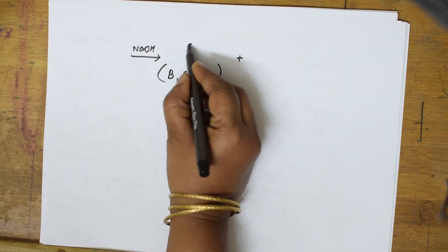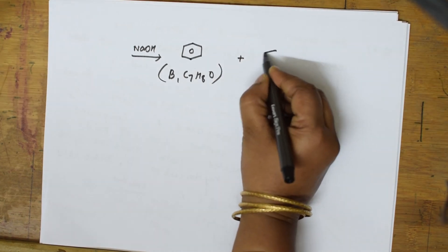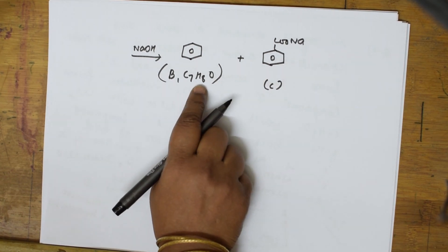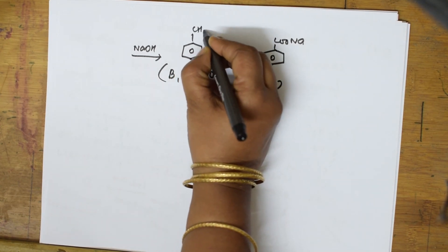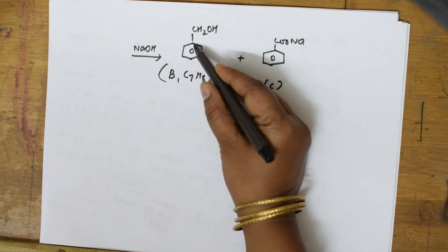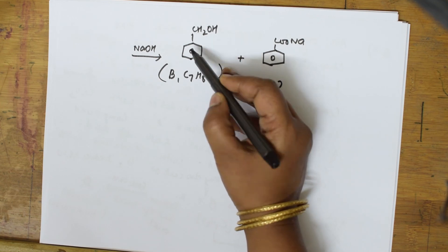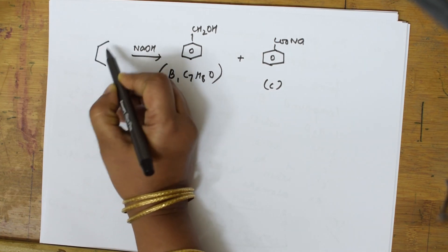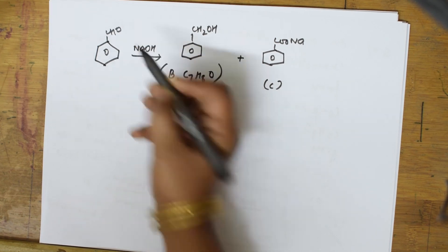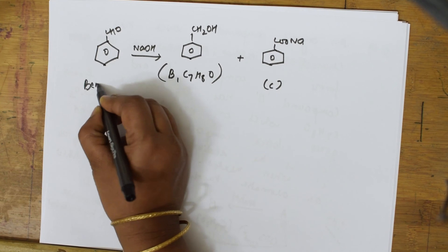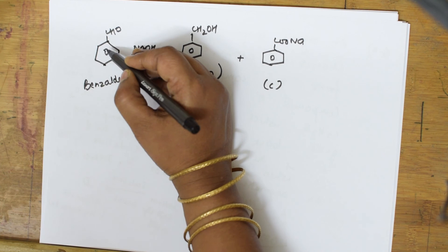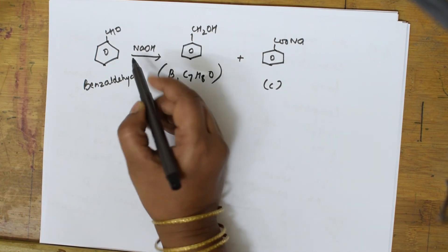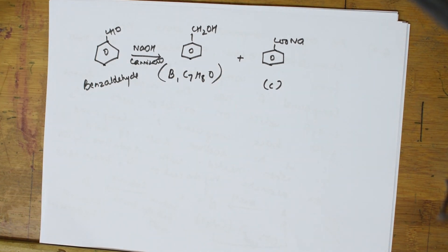Cannizzaro's reaction is shown by aldehydes without alpha hydrogen. Benzaldehyde C6H5CHO has no alpha hydrogen because the aldehyde is directly linked to the benzene ring. So compound A is benzaldehyde. The Cannizzaro reaction of benzaldehyde with NaOH gives benzyl alcohol (B) and sodium benzoate (C).